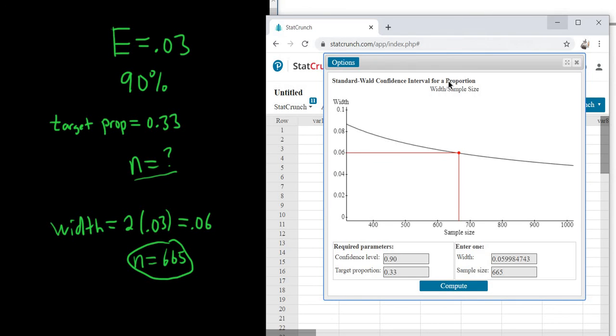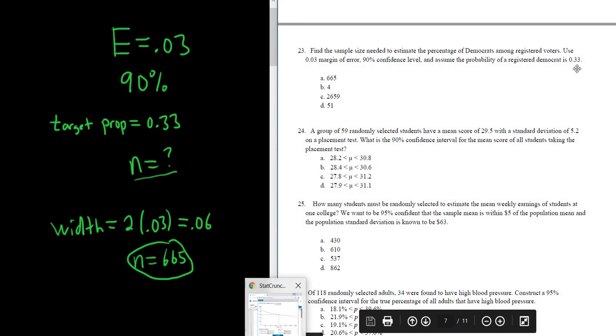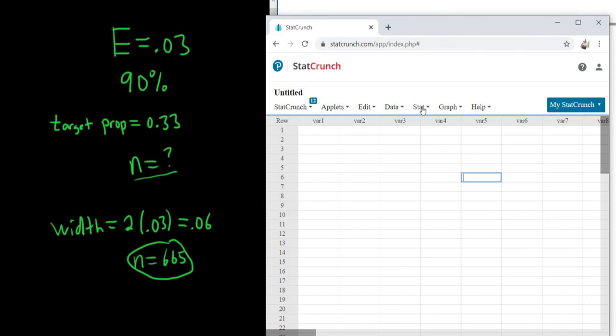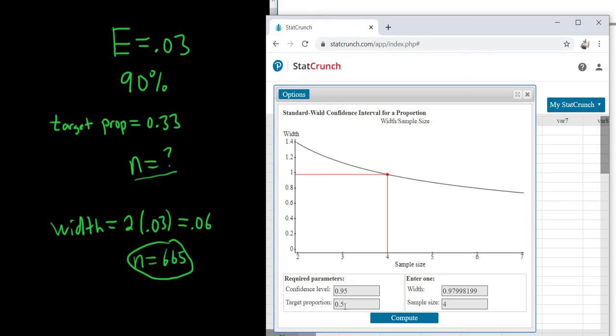So kind of interesting. So the keywords in this problem are sample size, so you know you're looking for N, and then estimated percentage. And so whenever you have that, again, you go to stat, proportion stats, one sample with sample size. You type everything in.